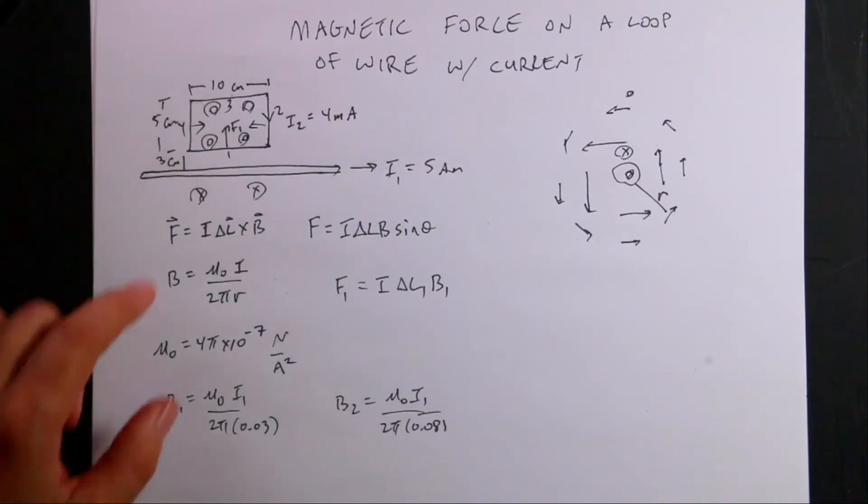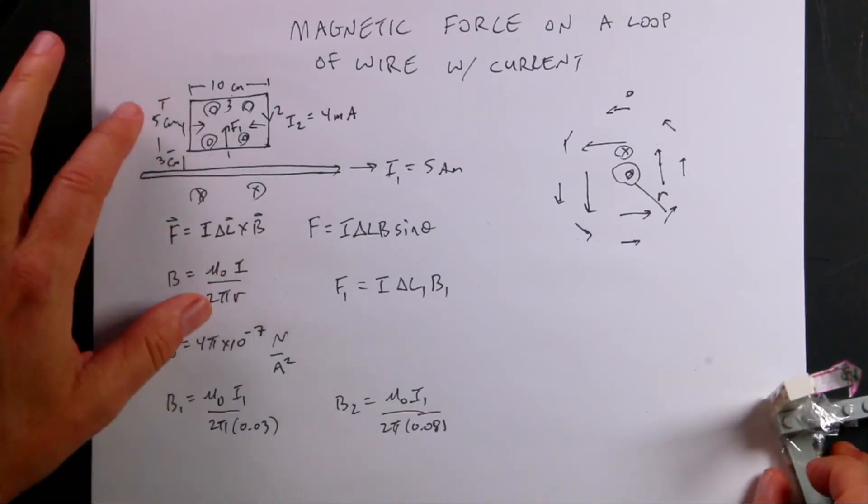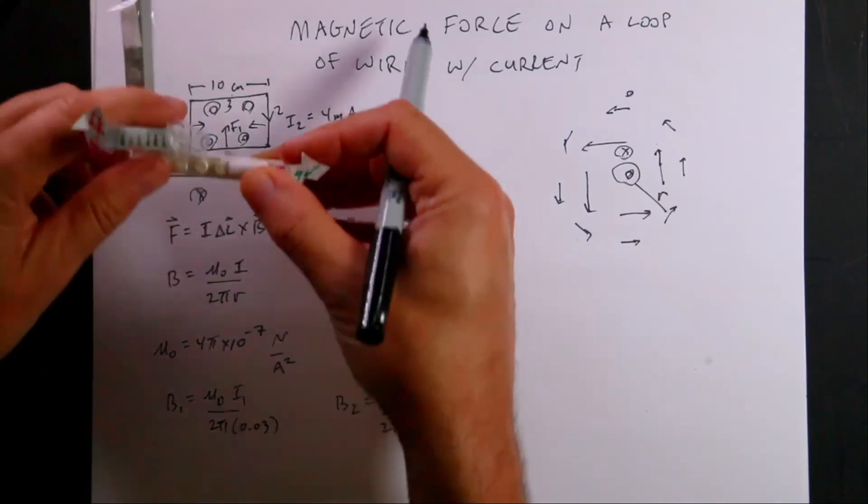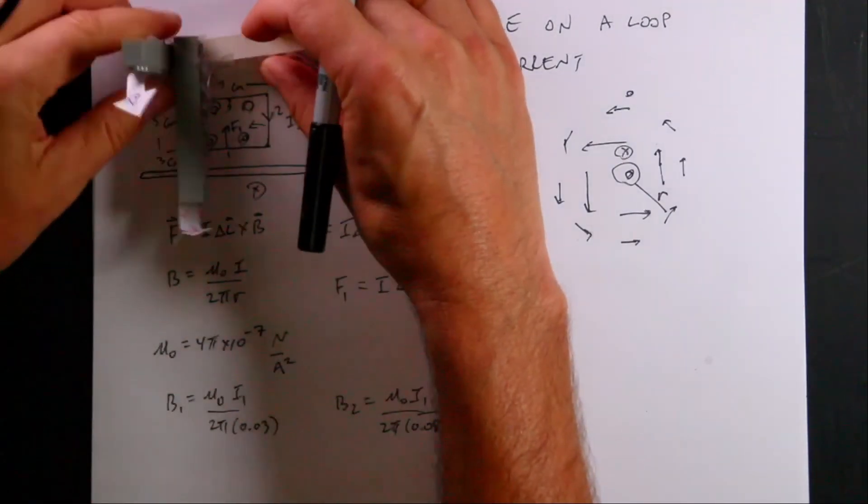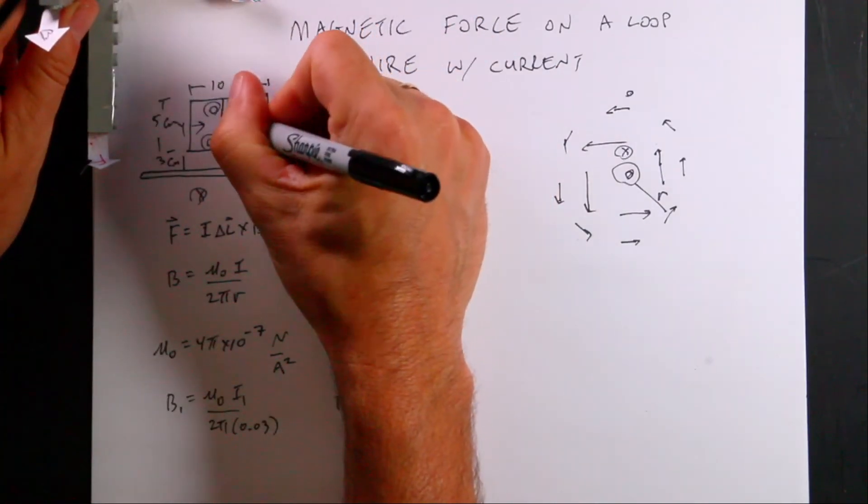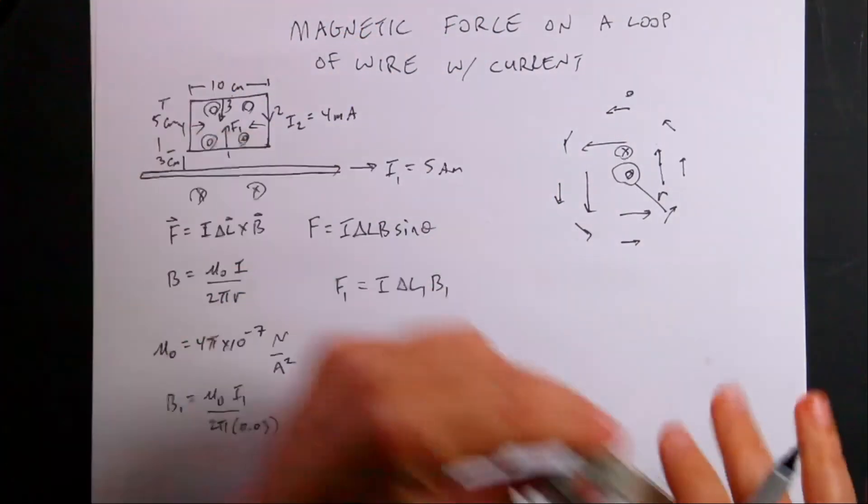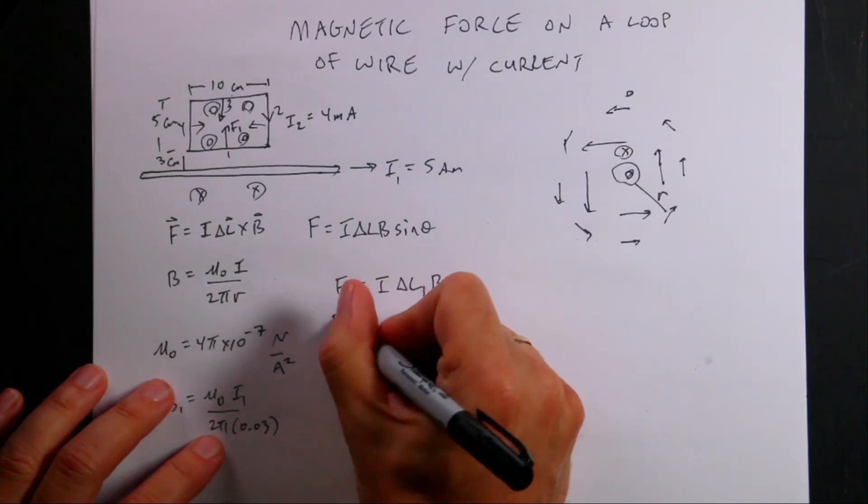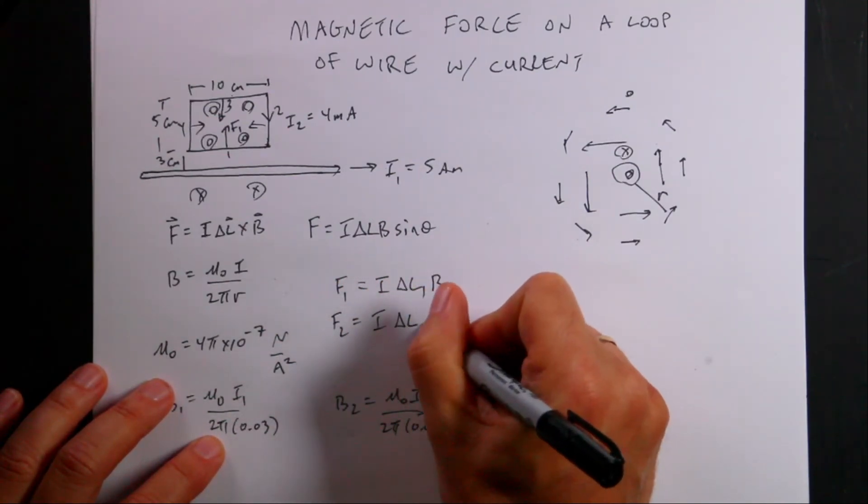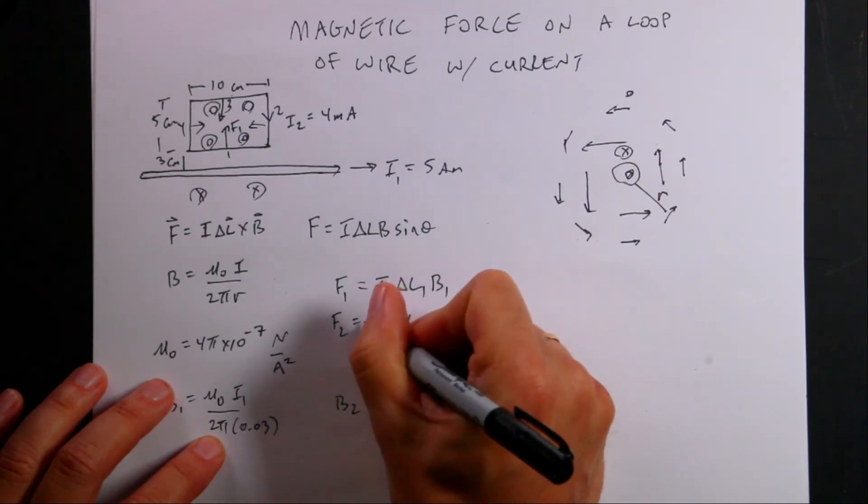What about the force on the top wire? F3. So now the current is going that way. QV is that way. B is out of the page. And that's going to be down. So I need to calculate F2. It's going to be I delta L3 B3 minus.